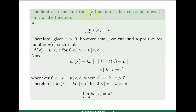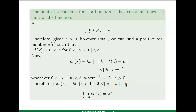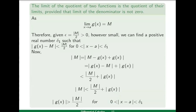Next we prove the constant multiplication rule: the limit of a constant times a function equals that constant times the limit. Given limit of f(x) is l as x approaches to a, we want to prove limit of k·f(x) equals kl. Starting from |k·f(x)−kl|, taking |k| common gives |k|·|f(x)−l|. Since |f(x)−l| less than epsilon, this is less than |k|·epsilon, written as epsilon-dash. This holds in the delta neighborhood of a, so by epsilon-delta definition, limit x approaches to a of k·f(x) equals kl.